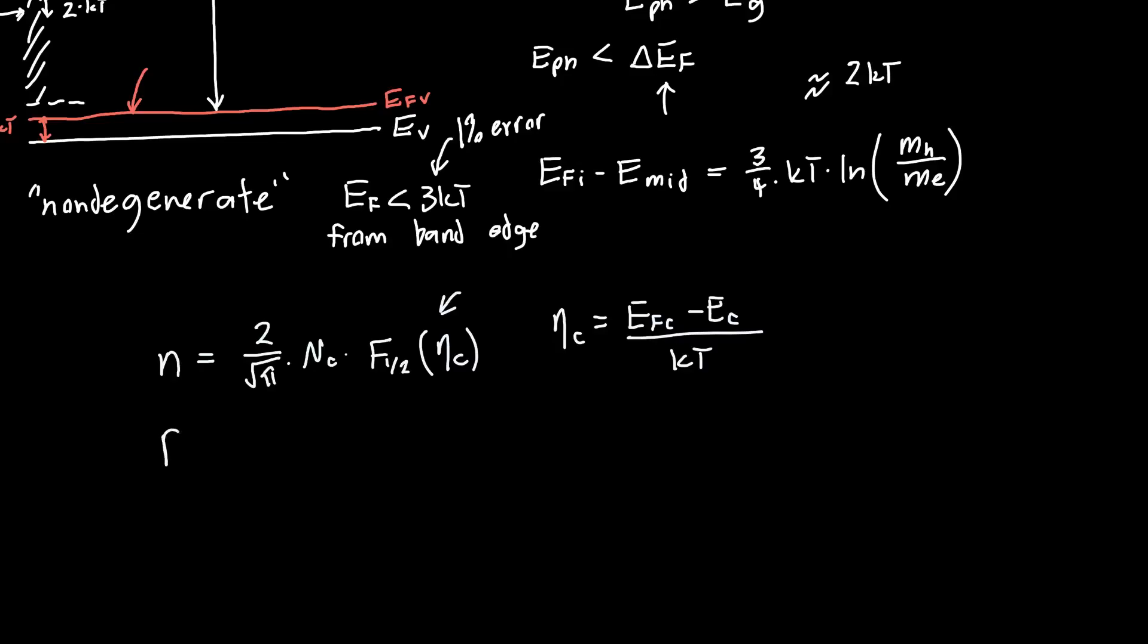If we wanted to be really precise, we could also calculate the holes this way. 2 over root pi nv times f1/2 now of eta v instead of eta c, where eta v is just this distance below. So if the Fermi level were below the valence band, it would be that distance. So it's ev minus EFv over kT.